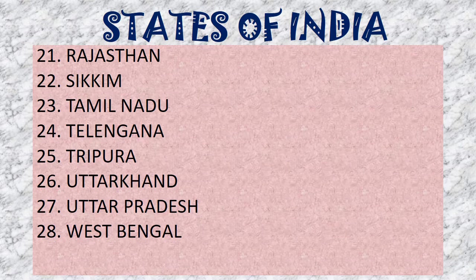Previously, Jammu and Kashmir was also among these states. Now it has shifted to Union Territory. So there are 28 states and 8 Union Territories. In your book it is given as 29 states and 7 Union Territories, but as of 2020 we have 28 states and 8 Union Territories.